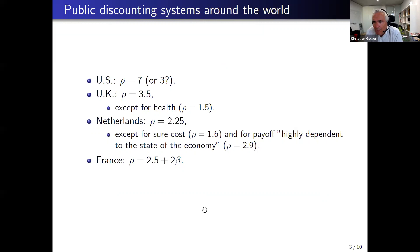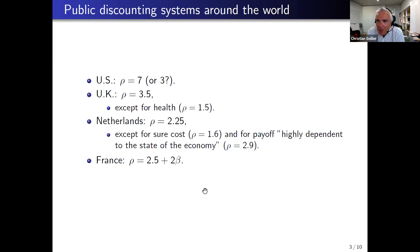What do we have around the world about adjusting the discount rate to the risk profile? In the US, the official discount rate is 7%, but there is a possibility to evaluate projects using a rate of 3% depending on whether the investment is financed by reducing consumption or displacing capital. That distinction doesn't make much sense to me, and I have no idea how to estimate how a public project is funded through displacement of capital versus reducing consumption.